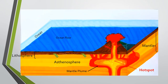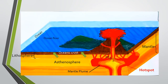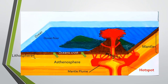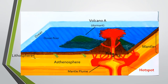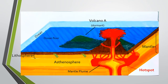In this figure, we will name the first volcano Volcano A. Since lithospheric plates move, volcanoes move away from the hot spot, cool, and subside, producing older islands. Volcano A becomes a dormant volcano as it moves with the oceanic crustal plate away from the hot spot.